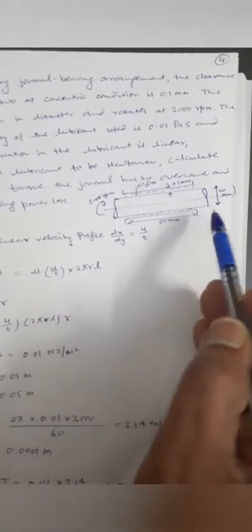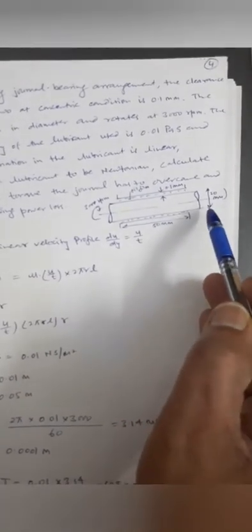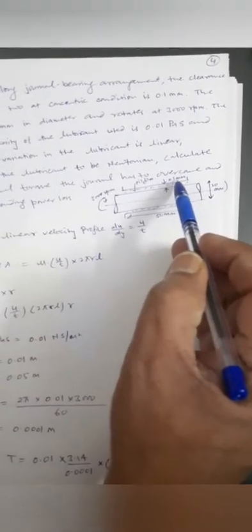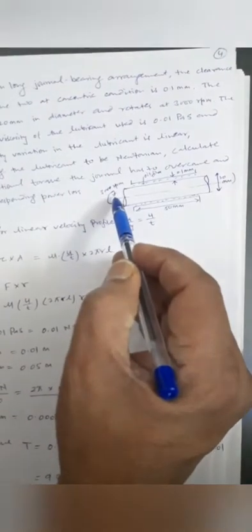This is the journal bearing. Length of journal bearing: 50 mm. Diameter: 20 mm. Thickness of oil film: 0.1 mm. RPM: 3000 rpm.